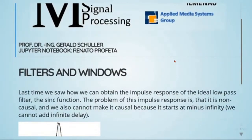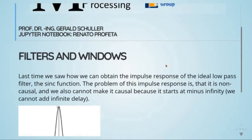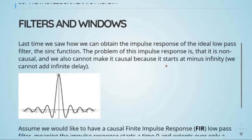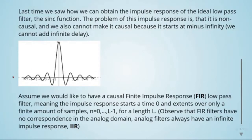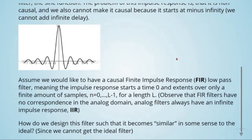Last time we saw how we can obtain the impulse response of the ideal low-pass filter: the sinc function. The problem with this impulse response is that it's non-causal and we cannot make it causal because it starts at minus infinity — we cannot add infinite delay. Here is our sinc function going from minus infinity to plus infinity. Assume we would like to have a causal finite impulse response FIR low-pass filter, meaning the impulse response starts at time zero and extends over only a finite number of samples N, from zero to L minus one for a length L. Observe that FIR filters have no correspondence in the analog domain; analog filters always have an infinite impulse response, IIR.